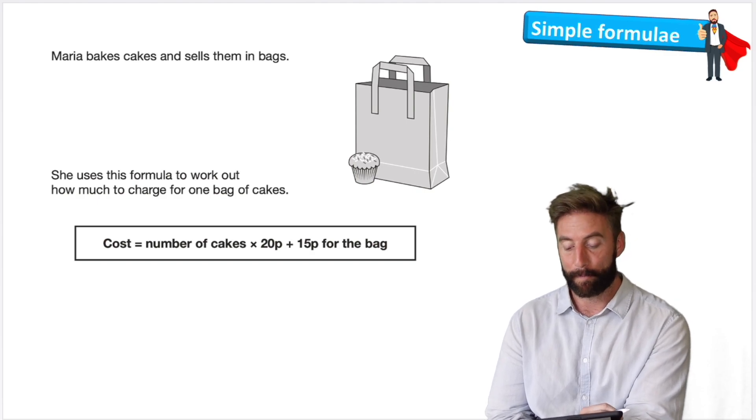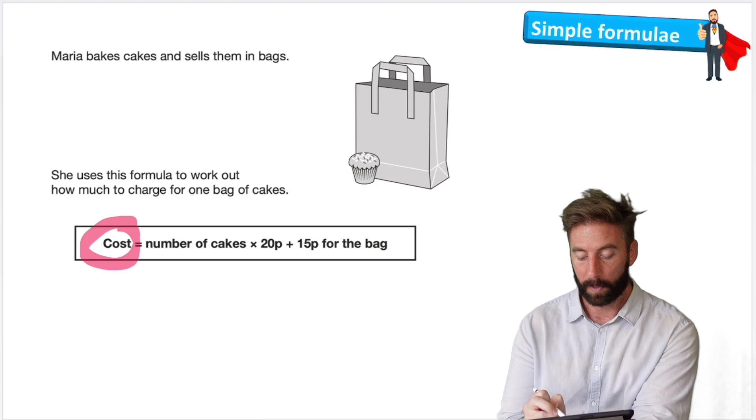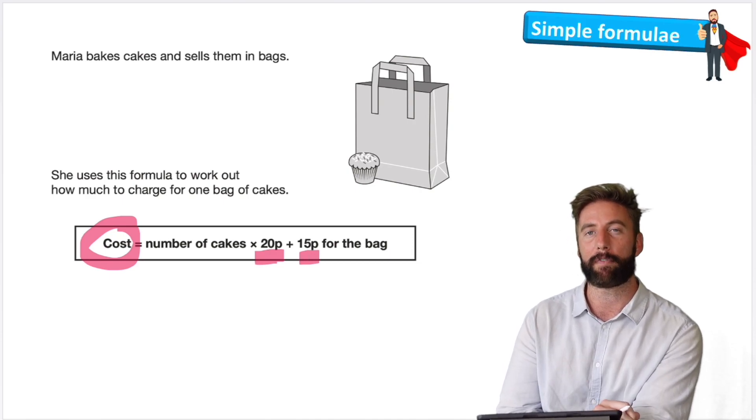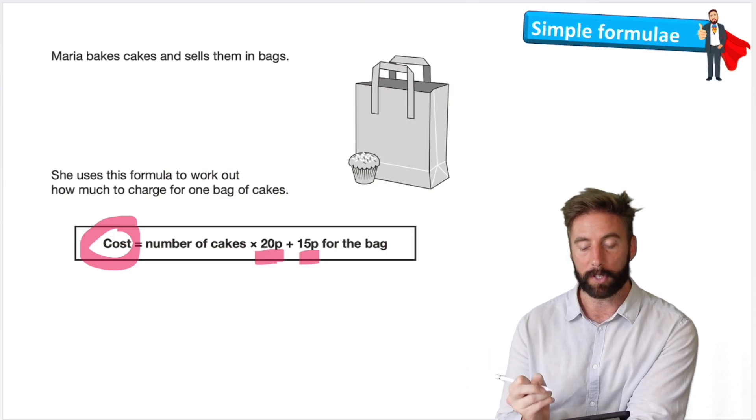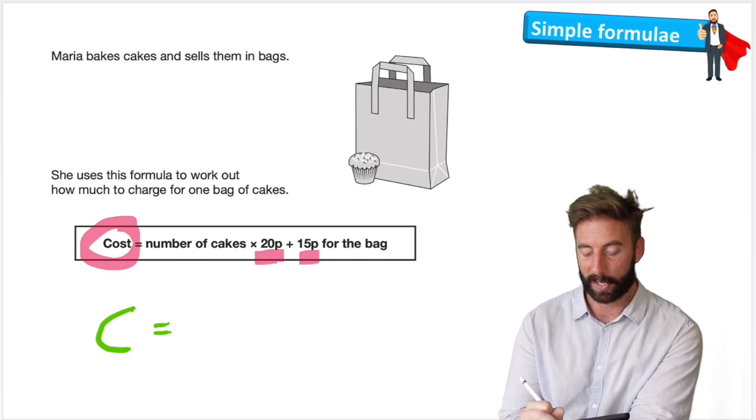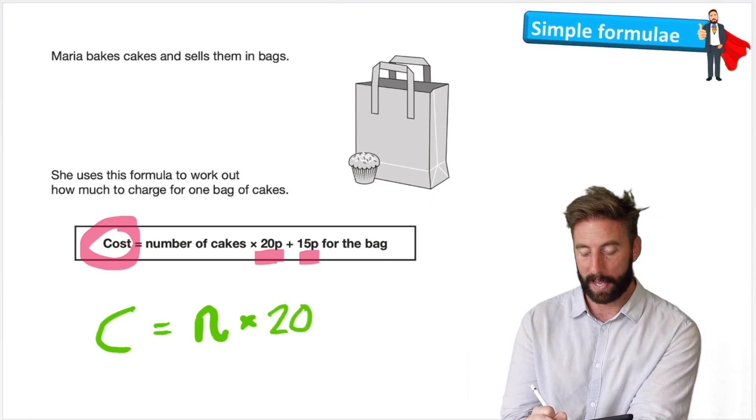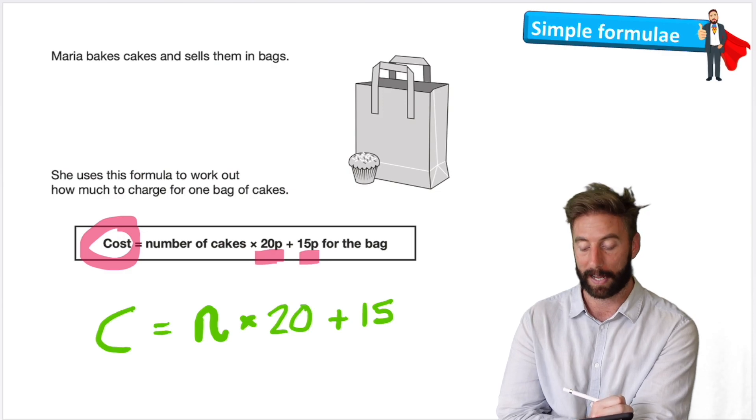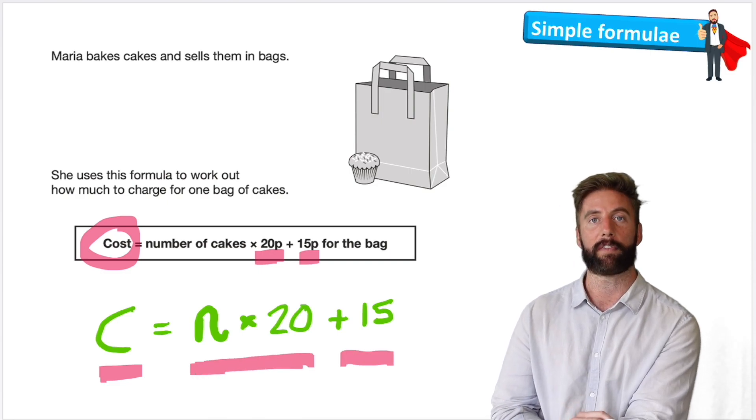Let's have a look at another one. Marie bakes cakes and sells them in bags. She uses this formula to work out how much to charge for one bag's worth of cakes. So you can see that the cost would be equal to the amount of cakes sold, which are 20 pence each, plus 15p for the bag. So we're always going to have to pay 15p for the bag, even if we buy one cake or if we buy 20 cakes. So let's try and see if we can create a formula for that. So my formula is going to have to start with a C equals. And then let's think back to our previous example, when we had a quantity we used the letter N. So I'm going to do that again, almost like the number, number of cakes. So N times 20, the number of cakes times 20 pence. But then remember, we have to plus this 15 every time because we have to pay for the bag. So this is what my formula would look like. The cost is equal to the number of cakes sold at 20 pence each plus 15 pence for the bag.